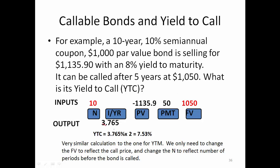Notice this 3.765 is for six months because this is a semi-annual coupon bond. For the whole year, the yield to call is 3.765% multiplied by 2, which equals 7.53%. Notice this number is lower than the 9% yield to maturity.